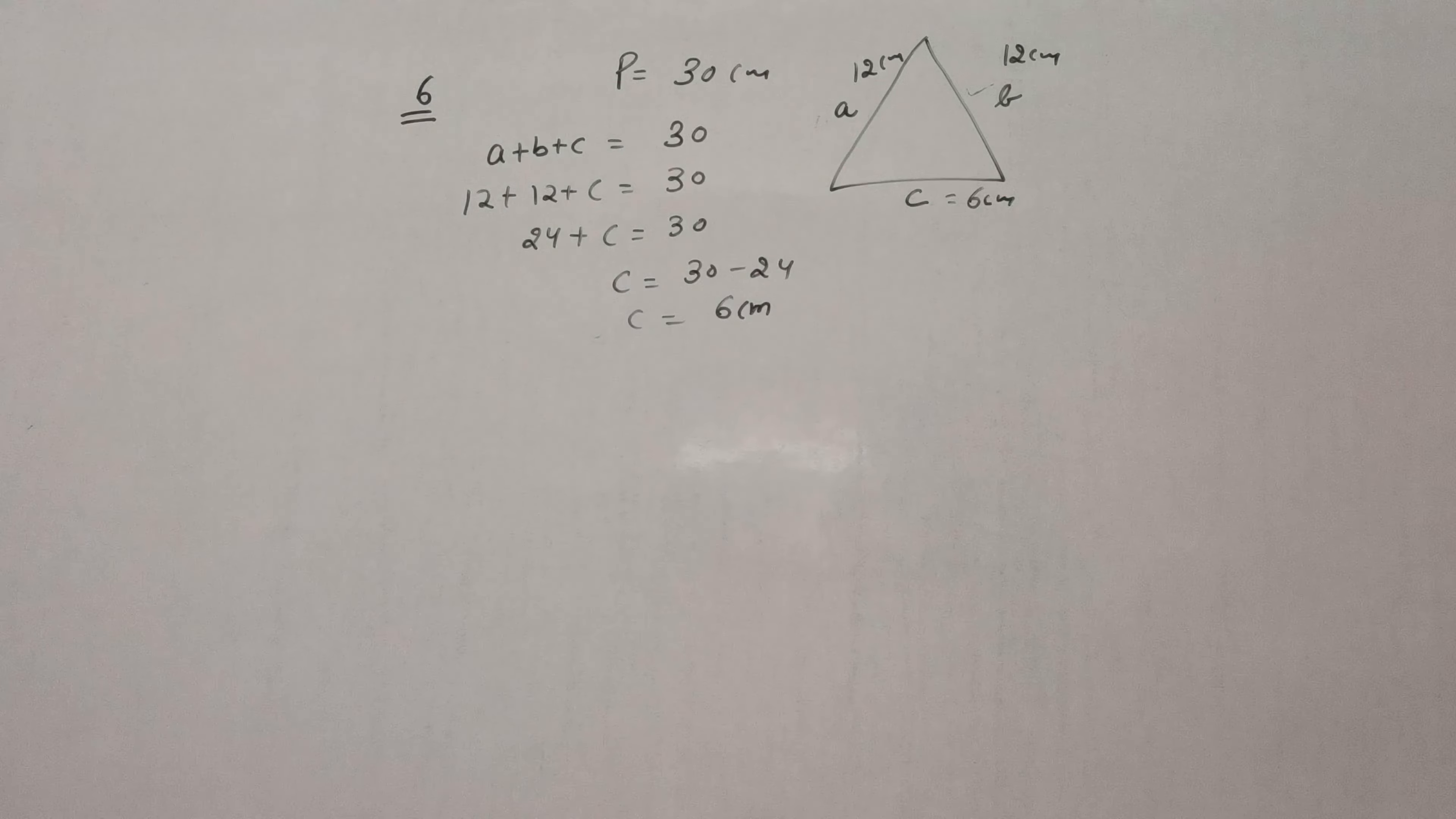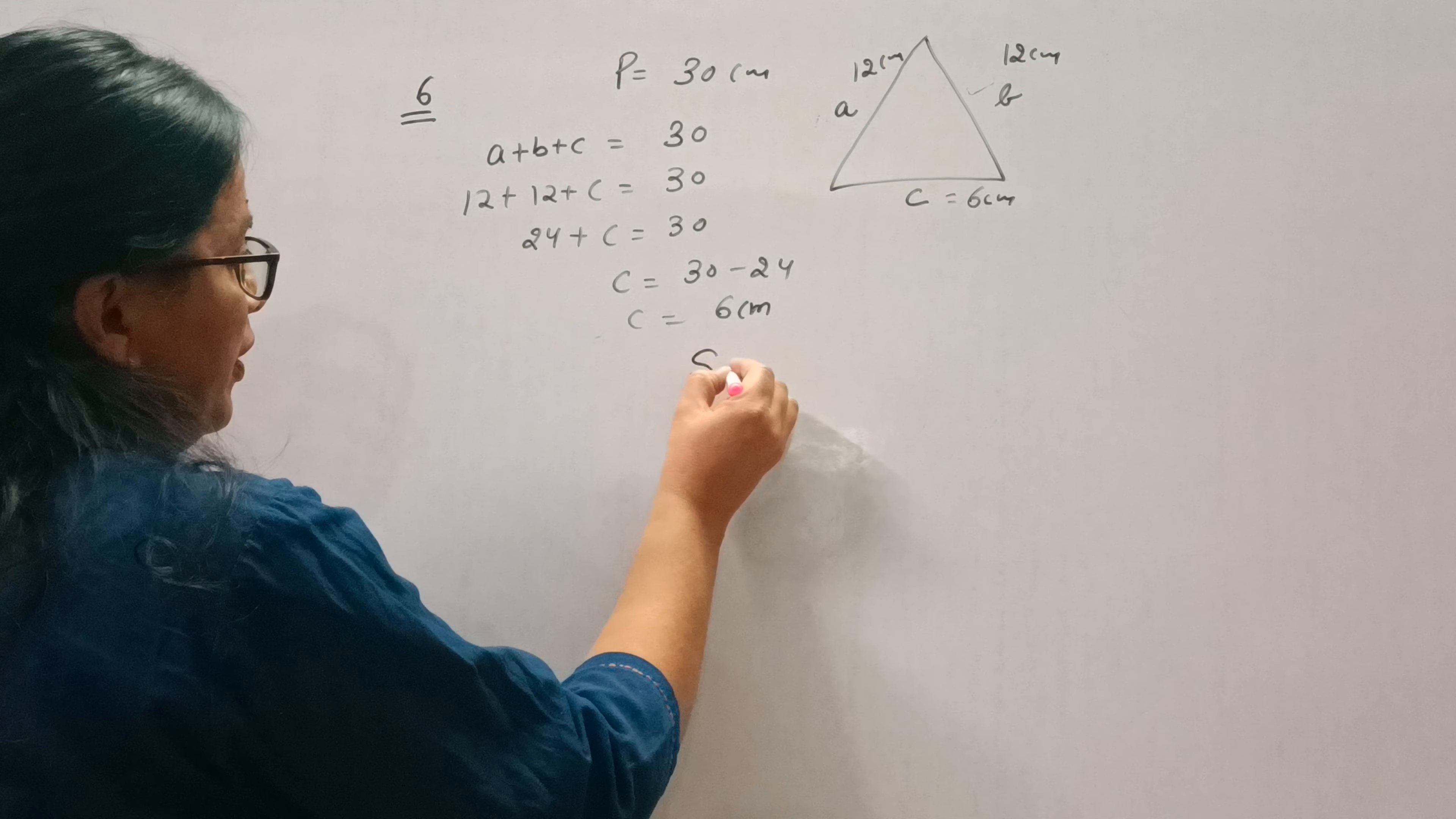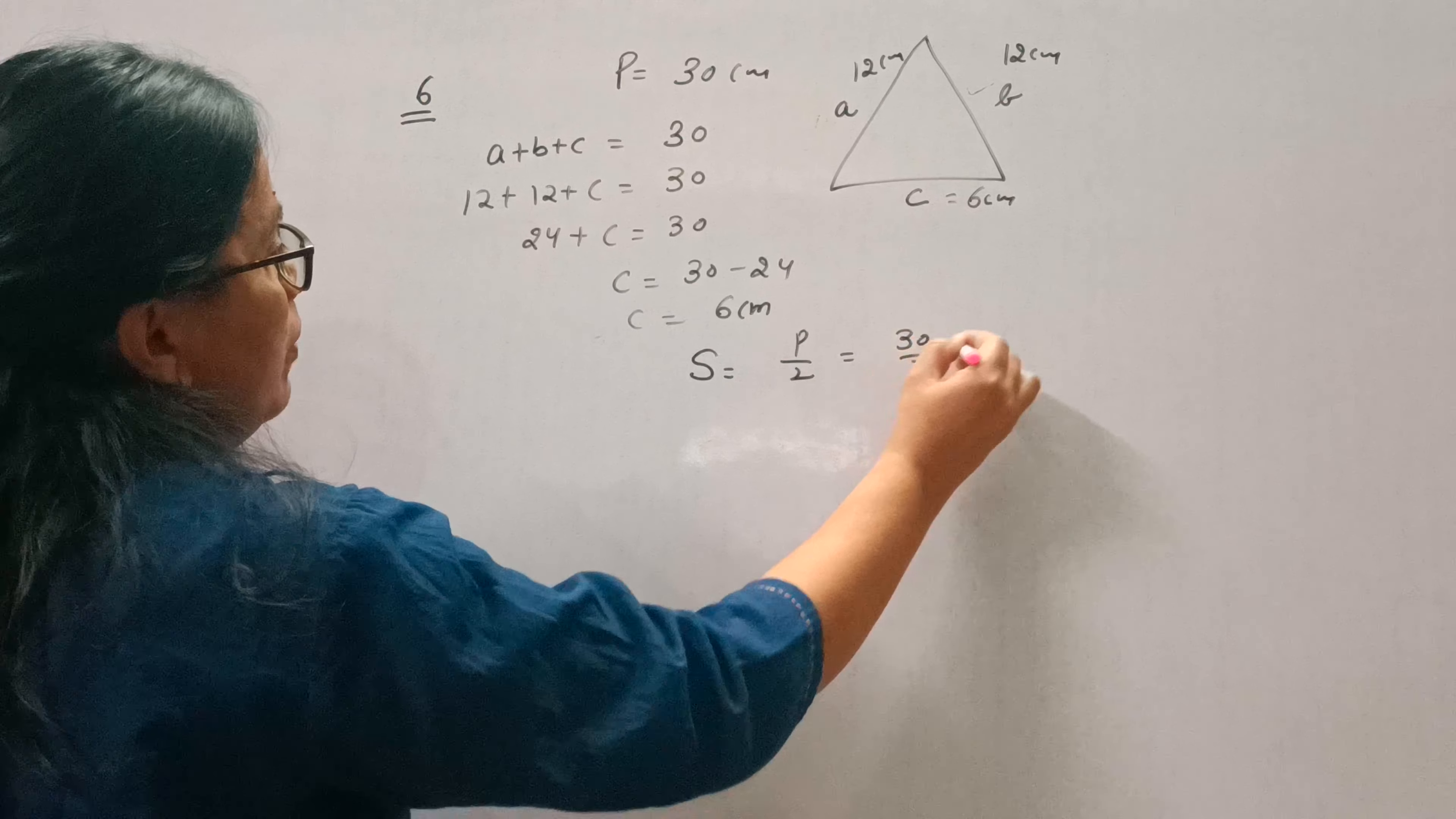Now for finding area we do two steps. First step is to find the semi-perimeter. Semi-perimeter means half of perimeter. So perimeter is 30, so semi-perimeter will be 15. In this question, perimeter is given to us, so simply we divide by 2.